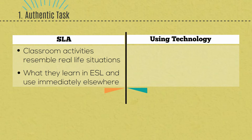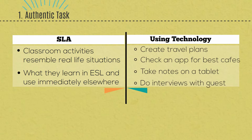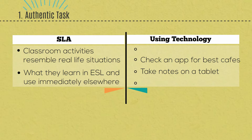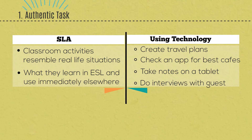First is Authentic Task. Authentic Task is best summarized by Carol Chappell, who said learners need to be involved in activities in the classroom which resemble what they will face in real life. Research indicates that adult learners need to be able to take what they learn in the classroom and apply it the next day at work, home, the grocery store, or anywhere outside the classroom.